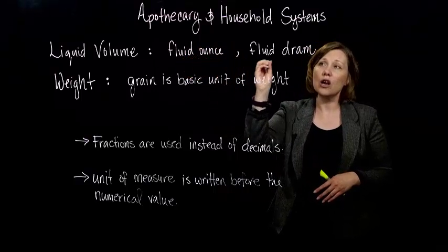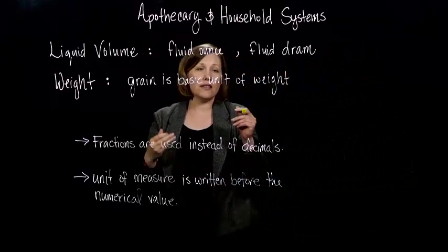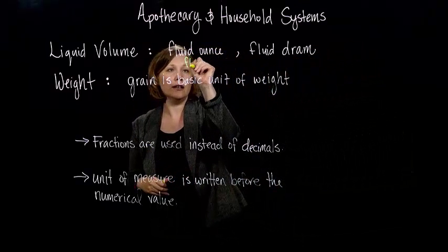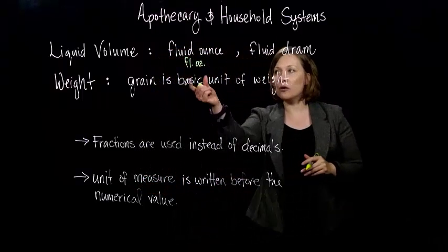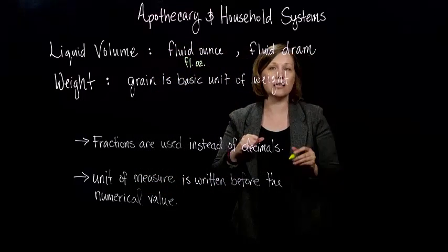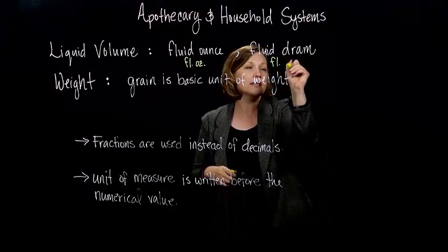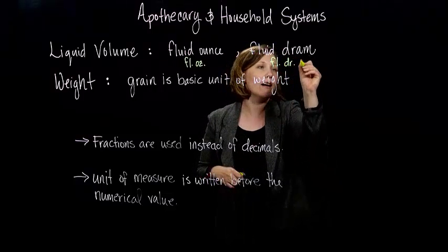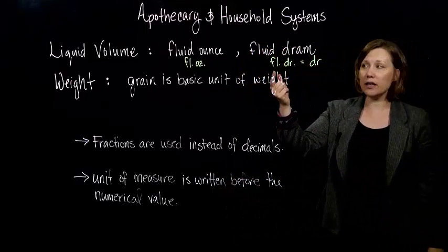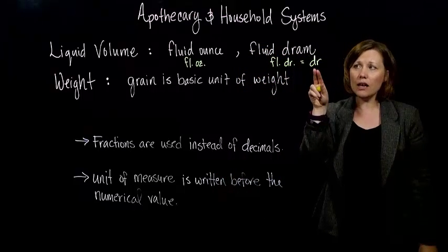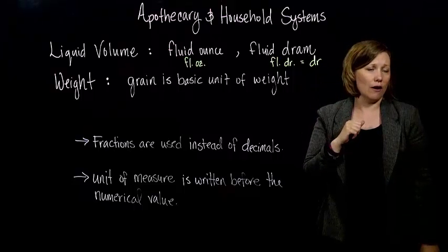we use fluid ounce or fluid drams. And we abbreviate them just like we do in the U.S. customary system for ounces. Fluid ounces is F-L-O-Z. And then fluid drams is F-L and then D-R. But often the F-L, the fluid part, is dropped and we just use the D-R for drams.